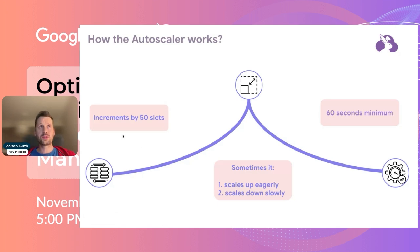How it works: there are a couple of limitations. One thing is that it can scale up and down by increments of 50 slots. This is actually good news compared to the previous version, because earlier it was 100 and now it can scale up by 50, so it can be more precise in that sense.